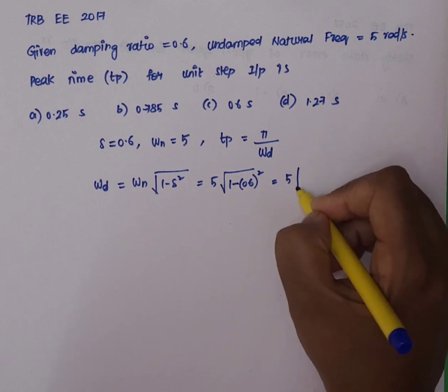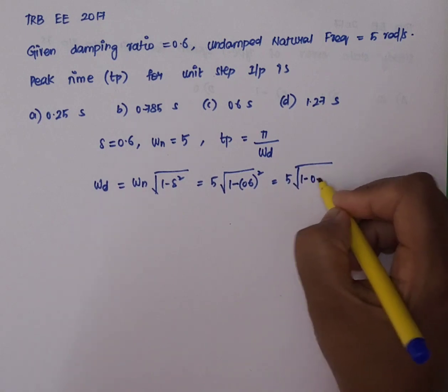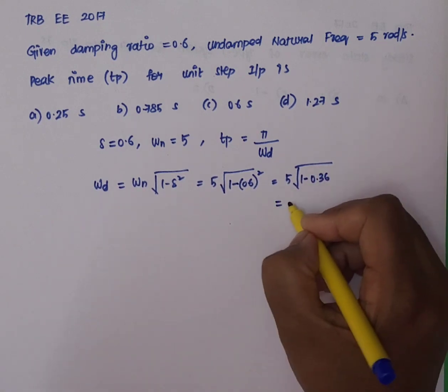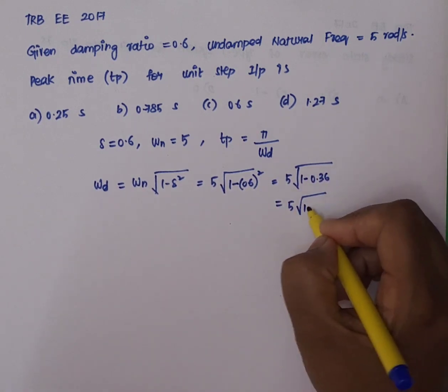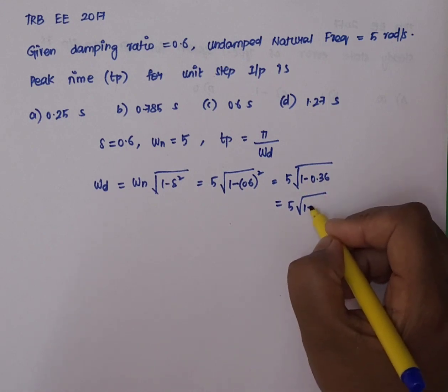So, if we solve this, 5 into square root of 1 minus 0.6 the whole square is 0.36. So, 5 into square root of 1 minus 0.36, the whole square value is 0.64.